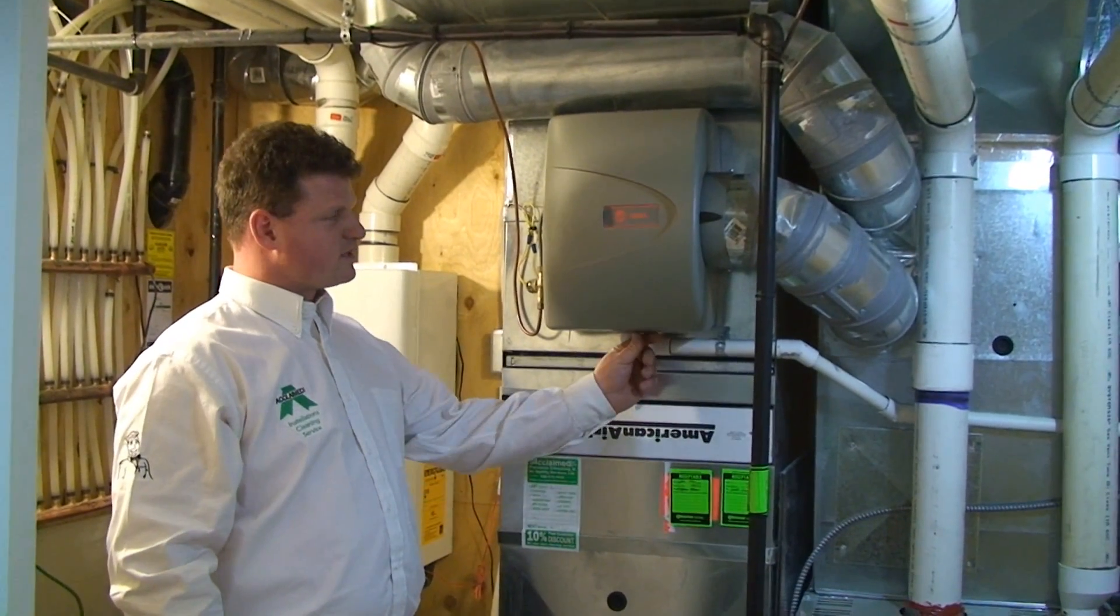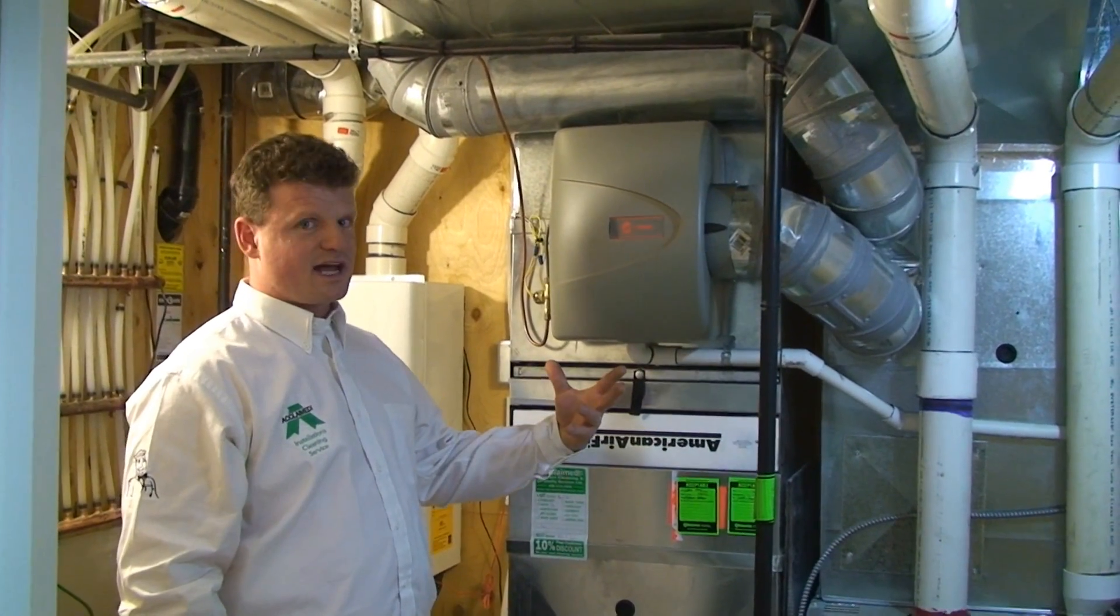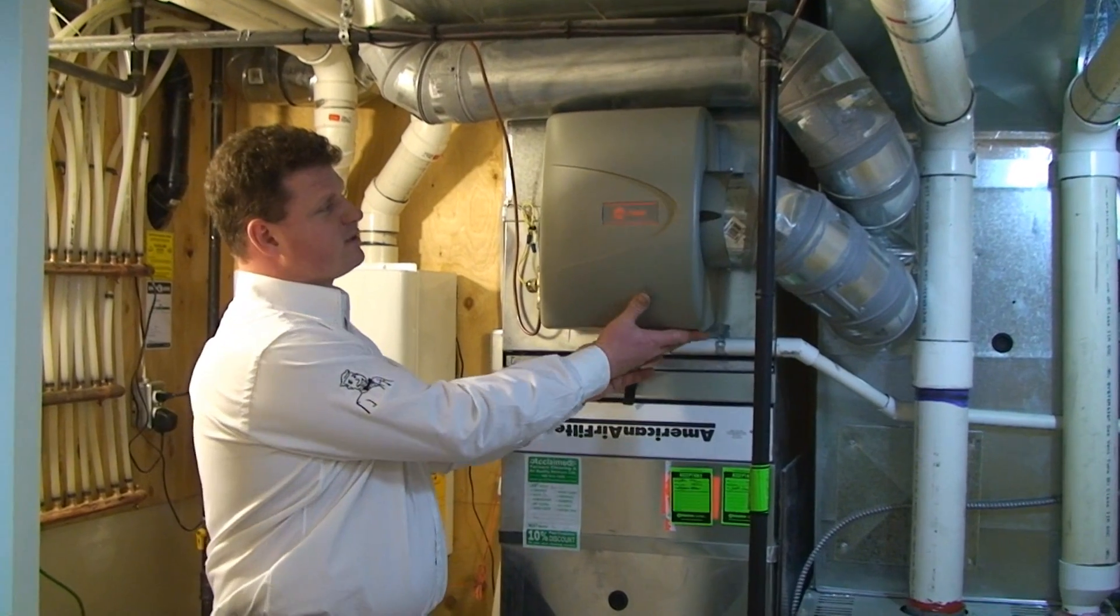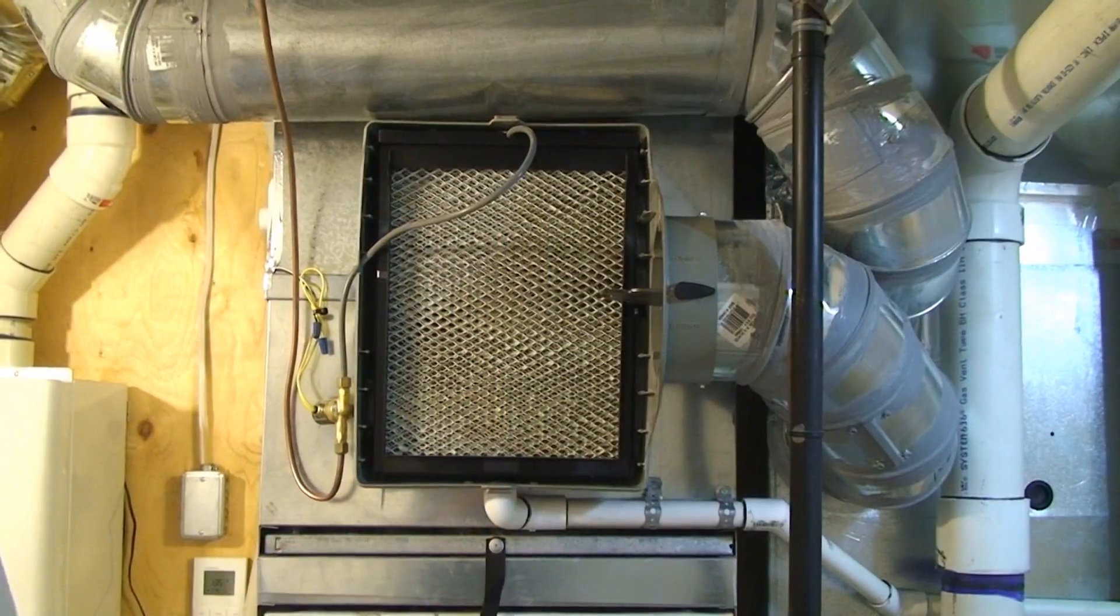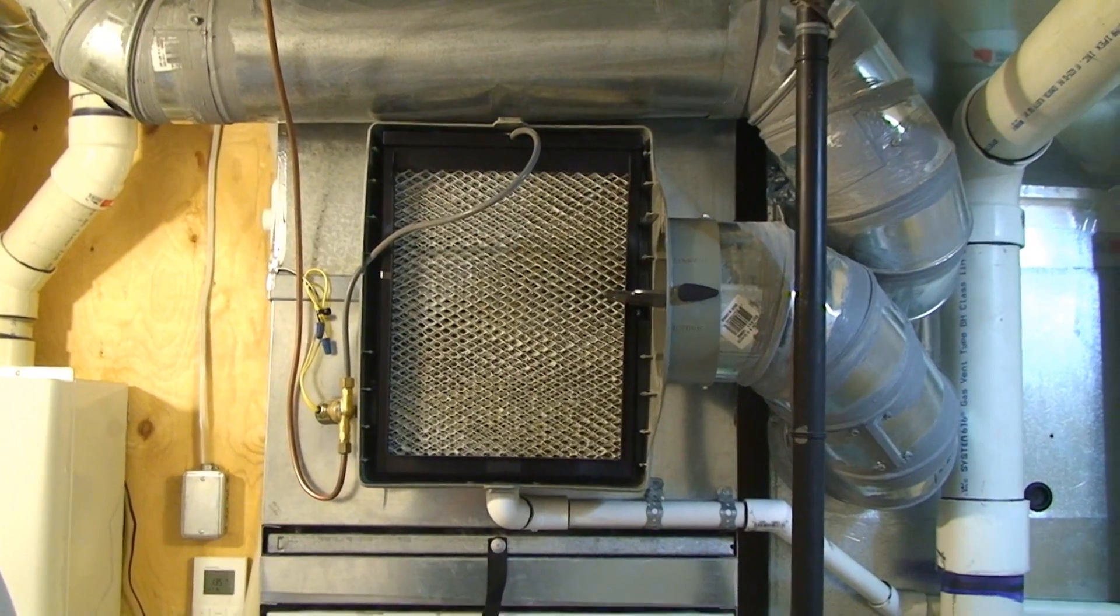There's a tab on the bottom as well as a tab on the top. Once you depress those, the cover just comes straight off. Once the cover is off the flow-through humidifier, you can see all of the components.